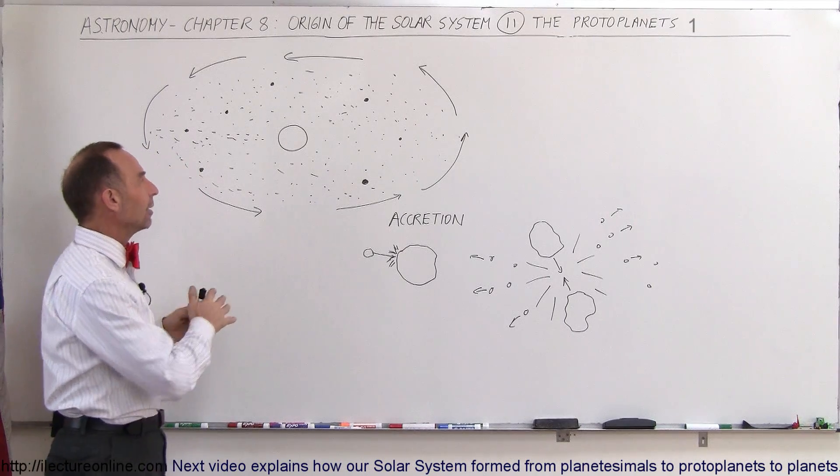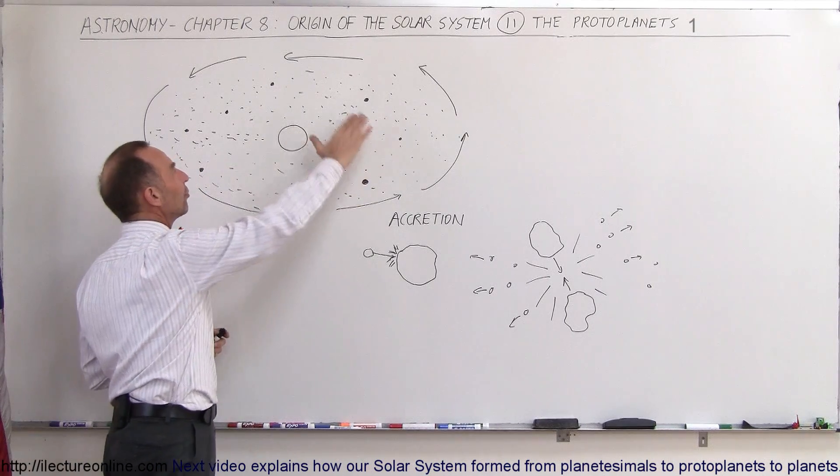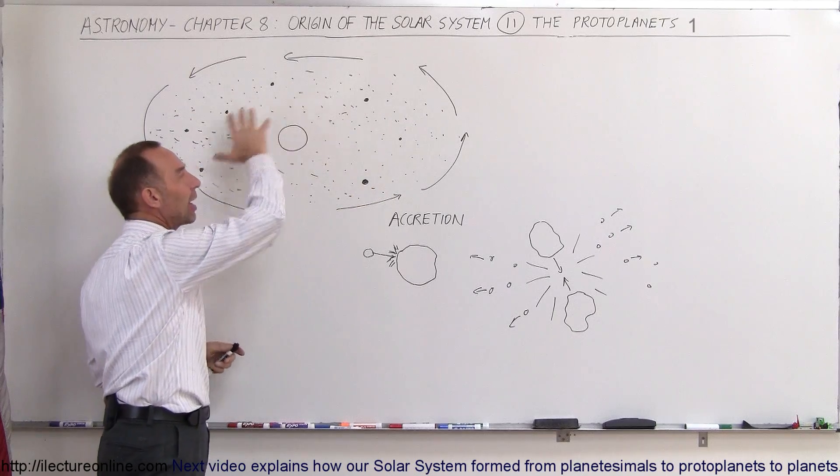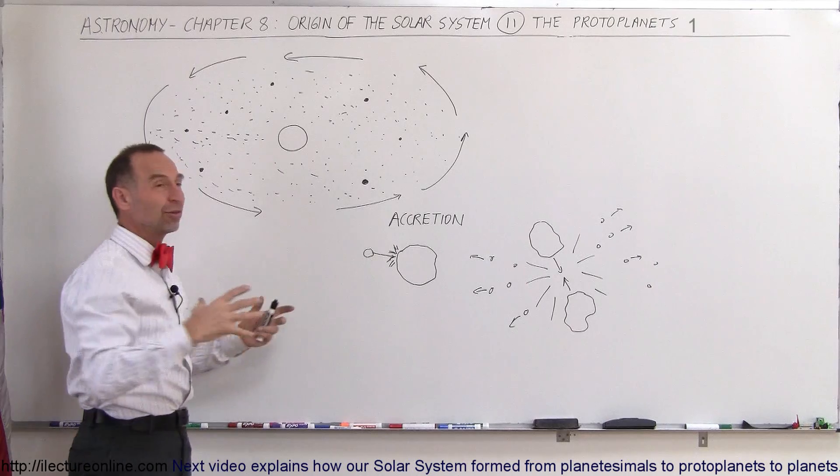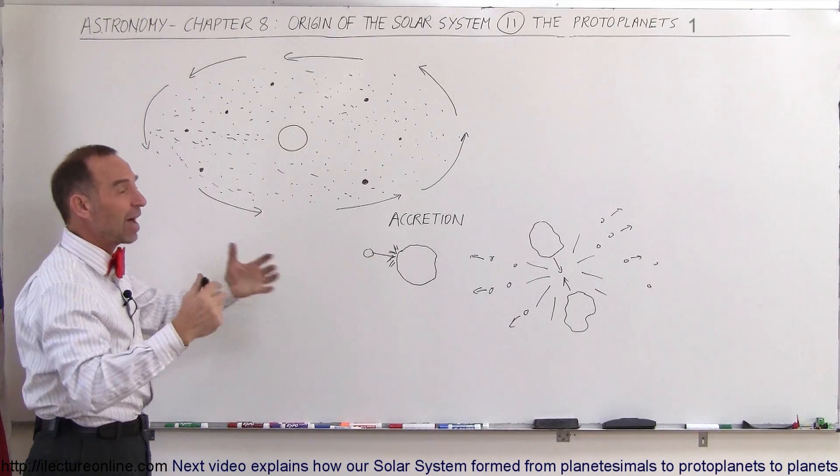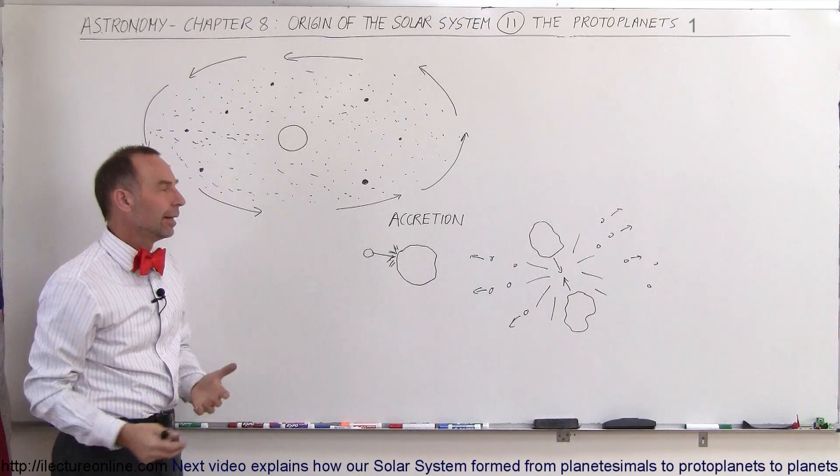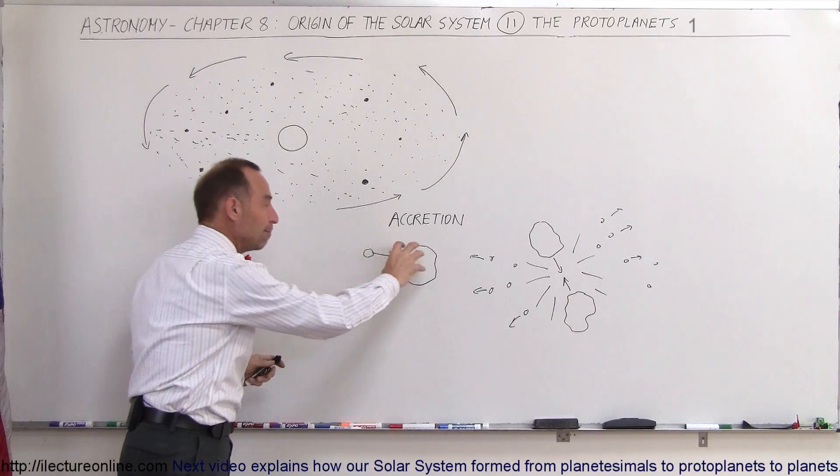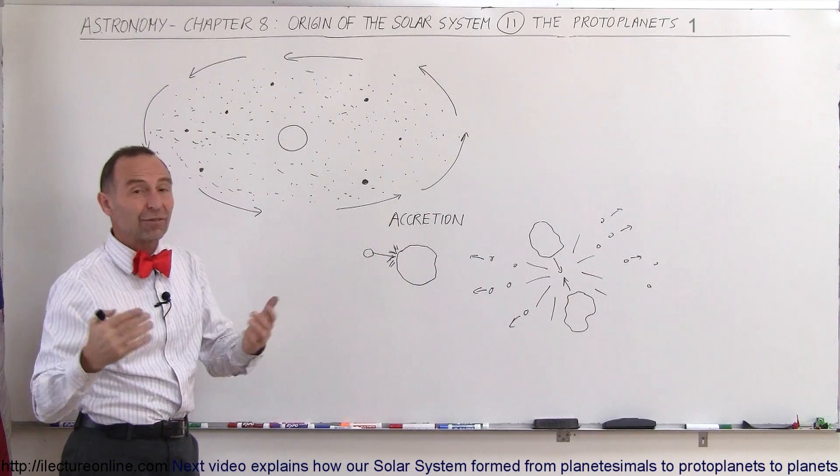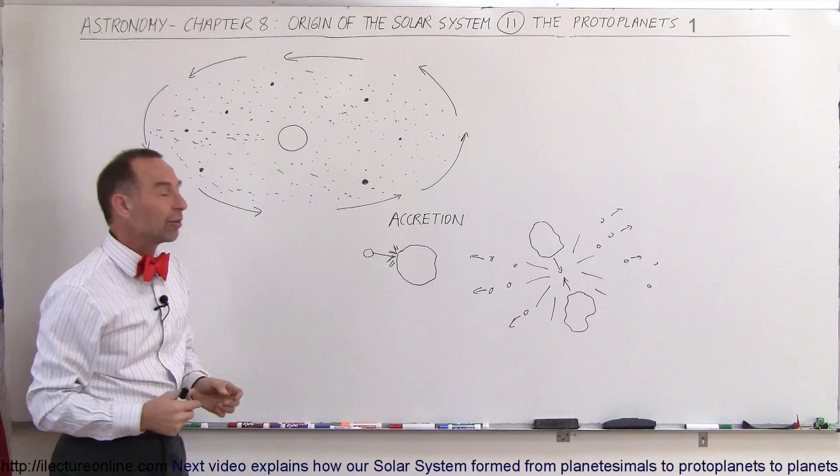But at first, what it became was just a vast array of probably millions of objects, some the size of a fist, some the size of a house, some the size of a mountain. And some of them were beginning to look like big bodies that had sizes of maybe 10, 20, 50, 100 miles across.